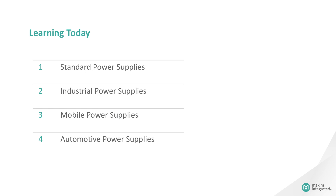Across the many market segments, the main thing we see is that the product sizes are shrinking while functionality is increasing. Every market is unique and has varying requirements of power levels, size, and load regulation. We will cover basics of standard, industrial, mobile, and automotive power supplies.